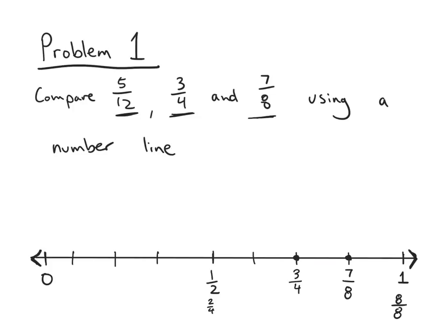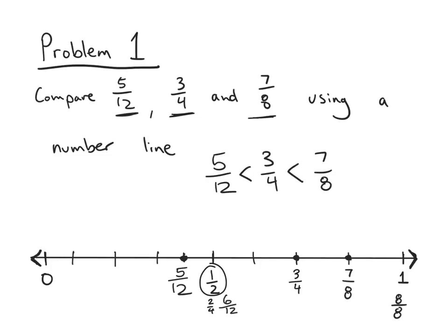For the last fraction, 5 twelfths, I'm going to reason using 1 half as the benchmark. What is 1 half decomposed into twelfths? Well, 1 half rewritten into twelfths would be 6 twelfths. And 5 twelfths is 1 twelfth less than 6 twelfths, so it's going to be 1 twelfth to the left of 1 half. Since the number line is already decomposed into eighths, I'll eyeball 1 twelfth and move 1 twelfth to the left. So I can see that 5 twelfths is less than 3 fourths, which is less than 7 eighths.